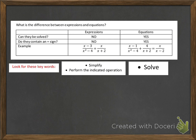So if you're working on a problem and it's an expression, key words that will be in the directions might say simplify, or it might say perform the indicated operation. For example, in this expression, the indicated operation is just addition. So what you would do is just find the common denominator and add the two expressions together.